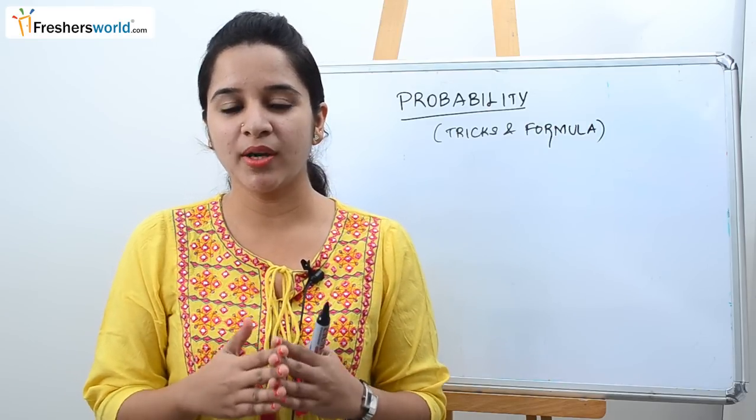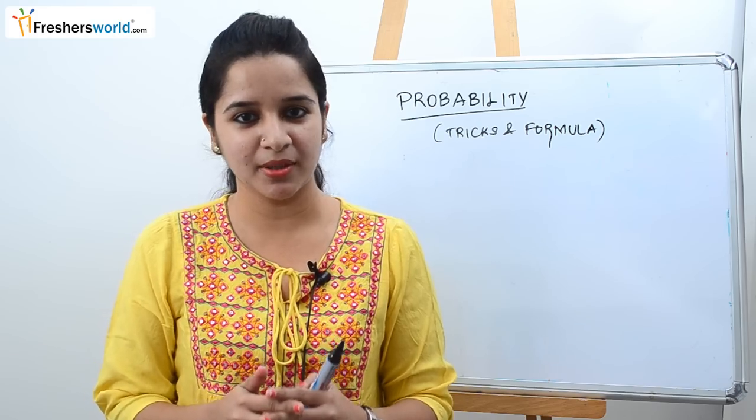So the basic formula that one needs to know to solve the aptitude sum in probability is P(E) = favorable outcomes / total outcomes.